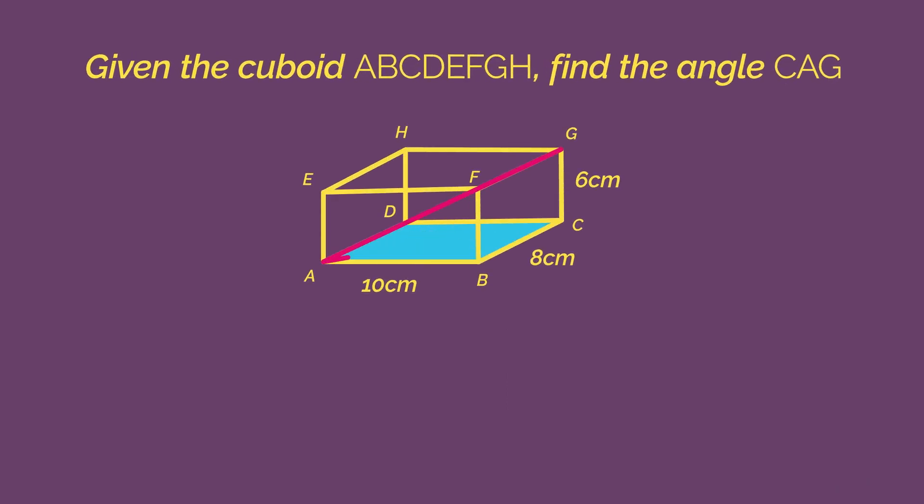Start by drawing your 2D right-angled triangle CAG. We know it's a right angle because CG is a vertical line and CA is a horizontal plane.